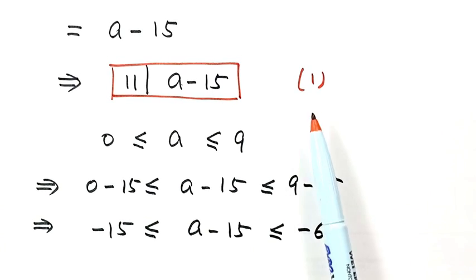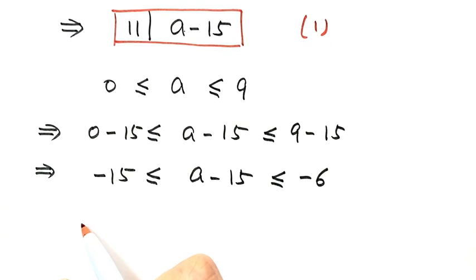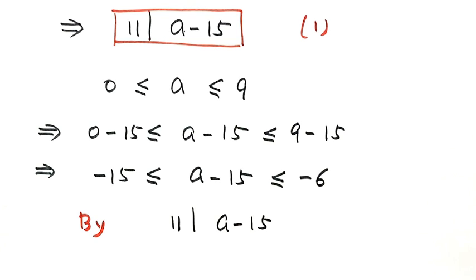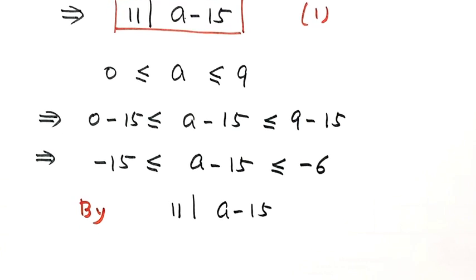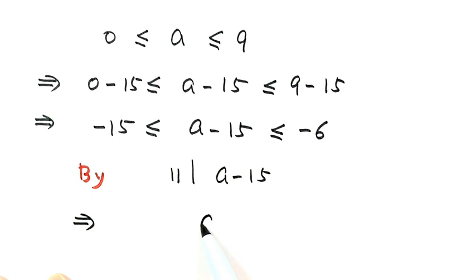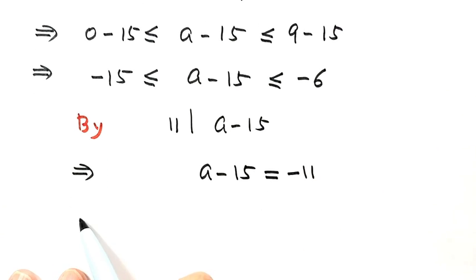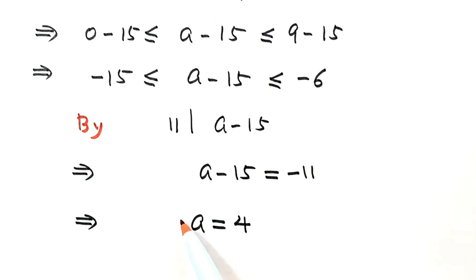Because a minus 15 must be divisible by 11, and between negative 15 and negative 6 there is only one number divisible by 11, which is negative 11, so a minus 15 equals negative 11. Solving for a, we get a equals 4. So 4 is the answer for this question.